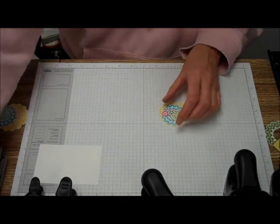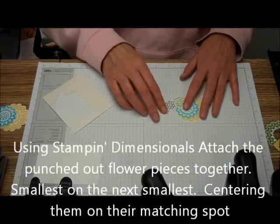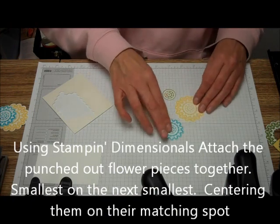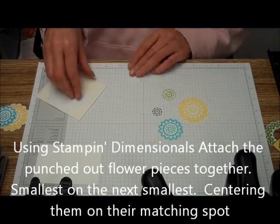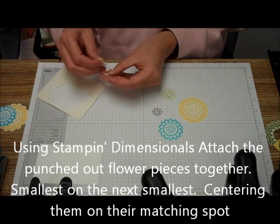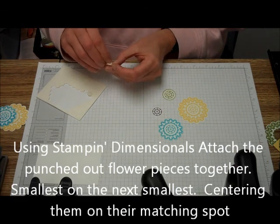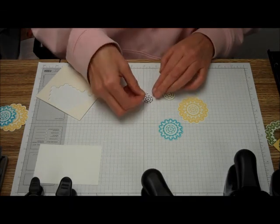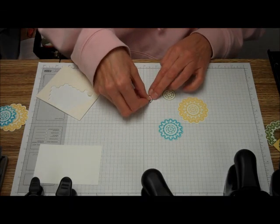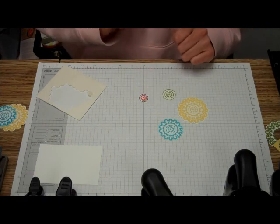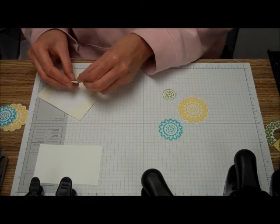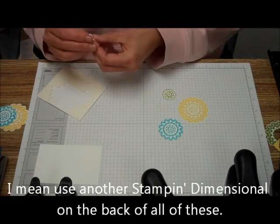With these five pieces, we're going to start with the smallest and put a Stamping Dimensional on the back of that. Then we're going to put that Melon Mambo on the Elegant Eggplant, right there where it belongs. Put a glue dot on the back of the Elegant Eggplant and put that on the Old Olive.